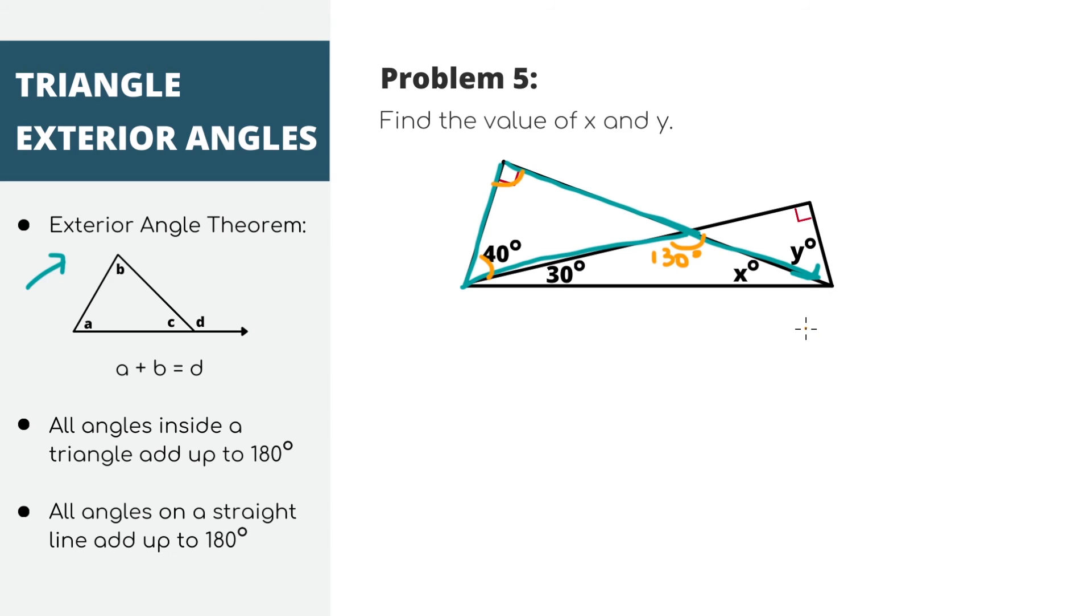To find x, we can use the fact that all interior angles in a triangle add up to 180. So 30 plus 130 plus x equals 180. We'll get x equals 20, which is half of our answer.